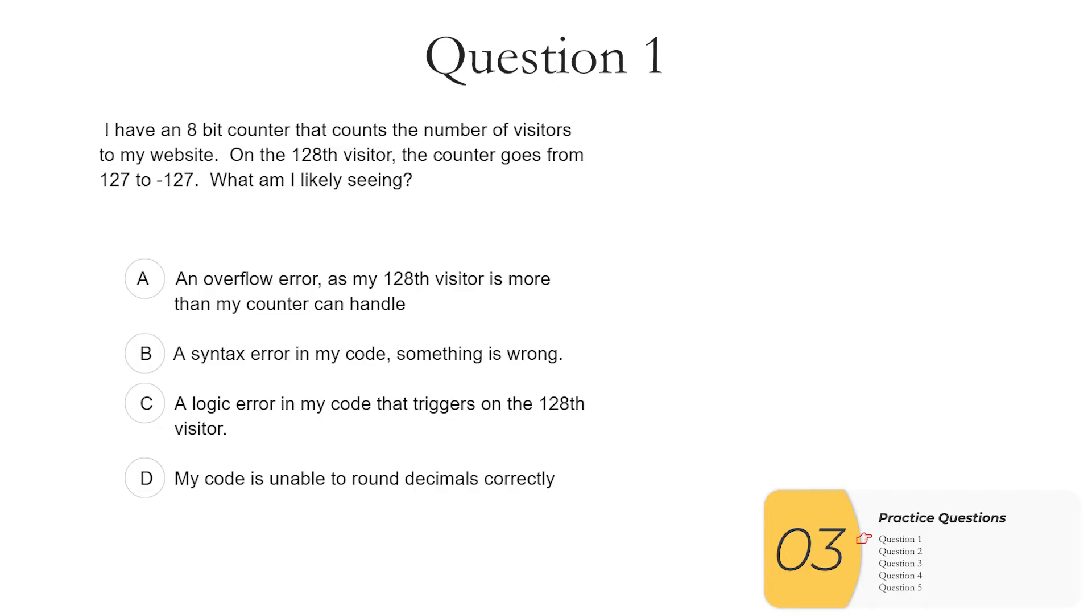On to the questions. Question one. I have an 8-bit counter that counts the number of visitors to my website. On the 128th visitor, the counter goes from 127 to minus 127. What am I likely seeing? So right away, I think you know when you see these numbers roll over, you're seeing an overflow error. So right away, I think you can answer A without thinking too hard about it. The answer is not B. It's not a syntax error. A syntax error would crash your code right away. It's really unlikely it's a logic error that fails on the 128th visitor. And there are no decimals. So rounding errors are not something that we want to care about here. There are no decimals. So it can't be a rounding error.